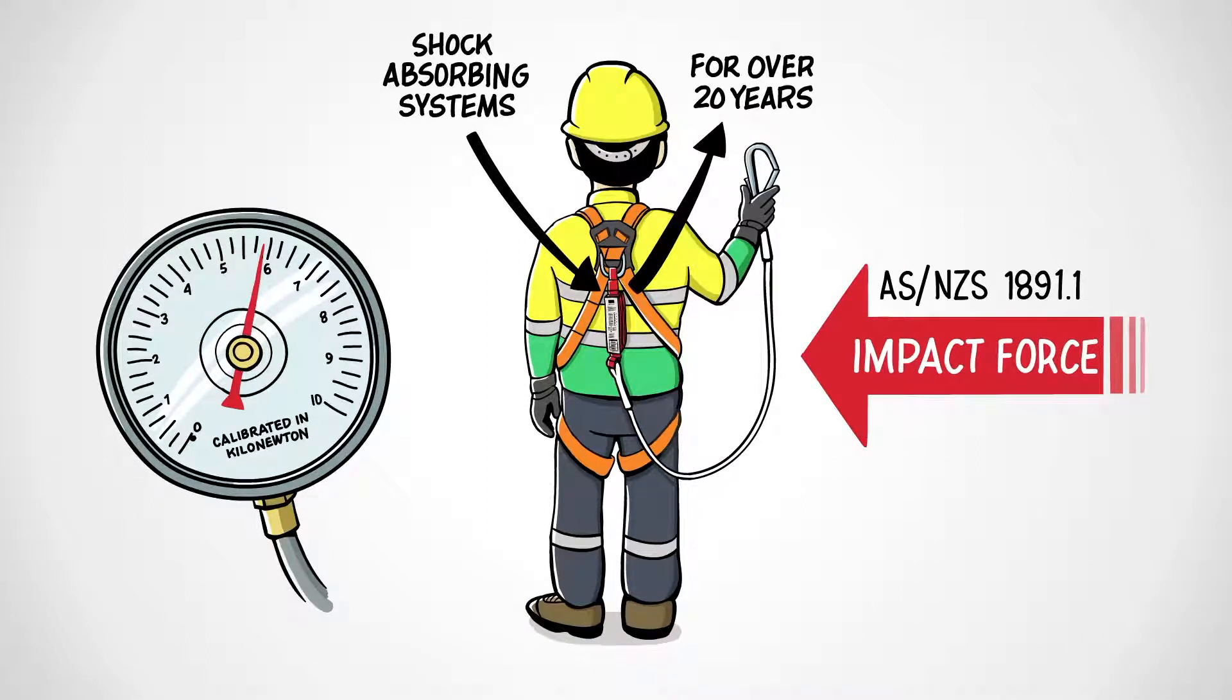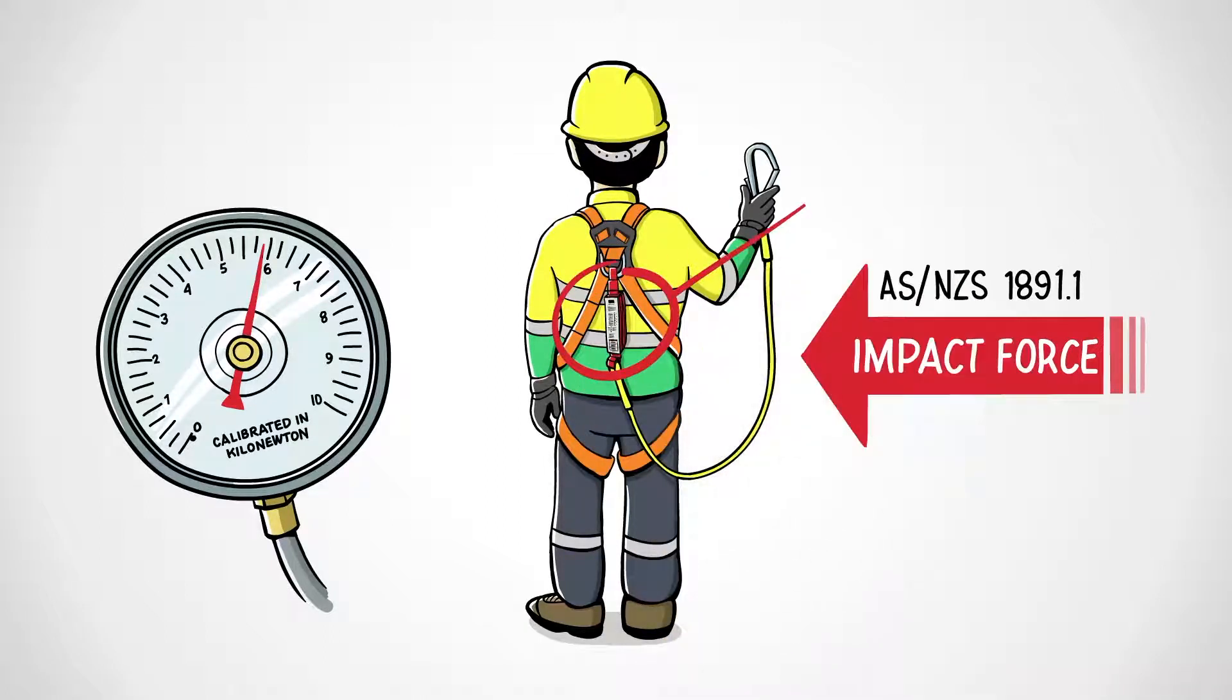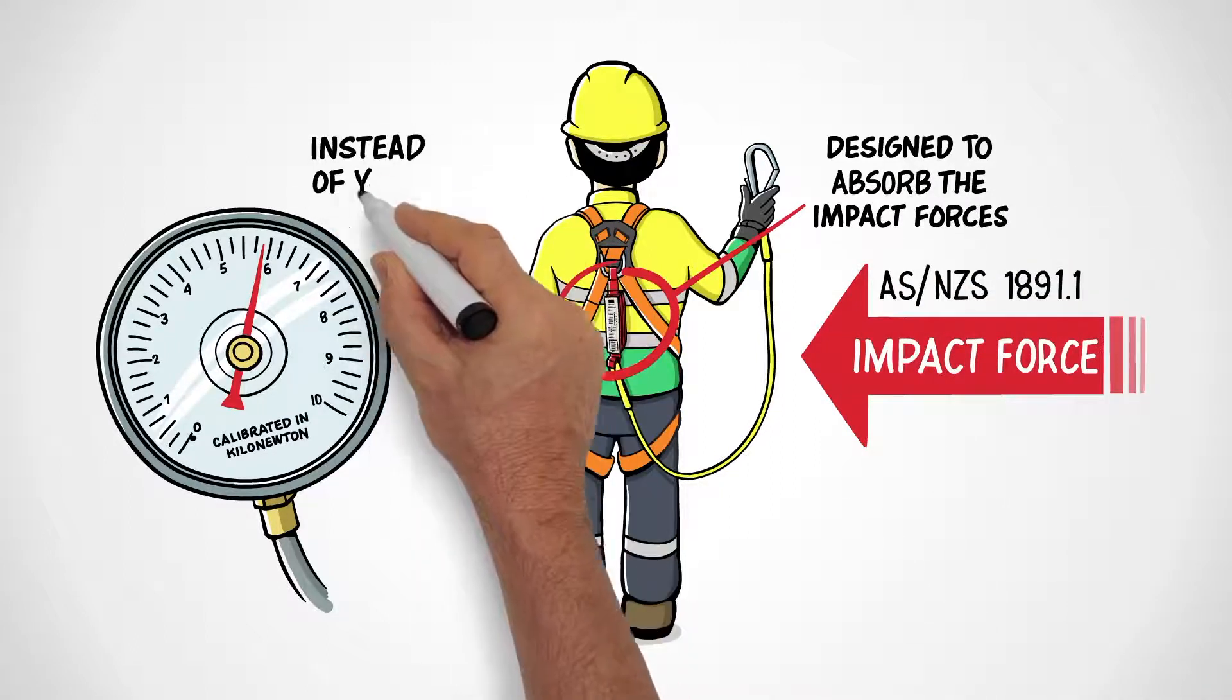that's about 600 kilos of force. When using a fall arrest lanyard, the built-in shock absorber is designed to absorb the impact forces created when your fall is arrested instead of your body.